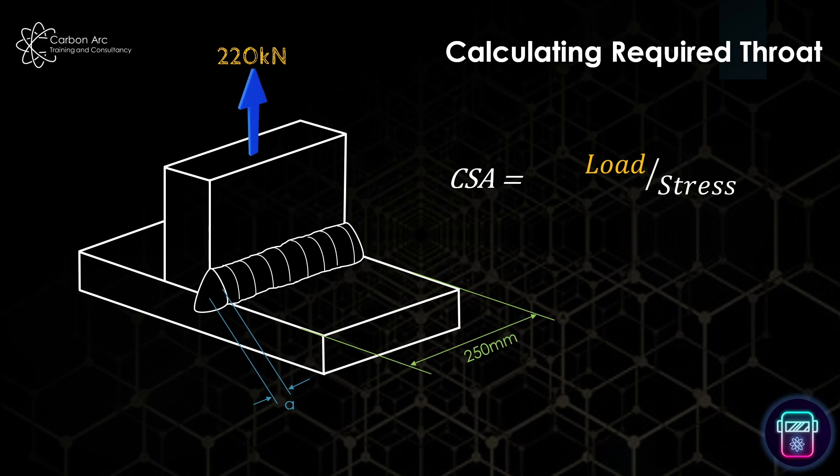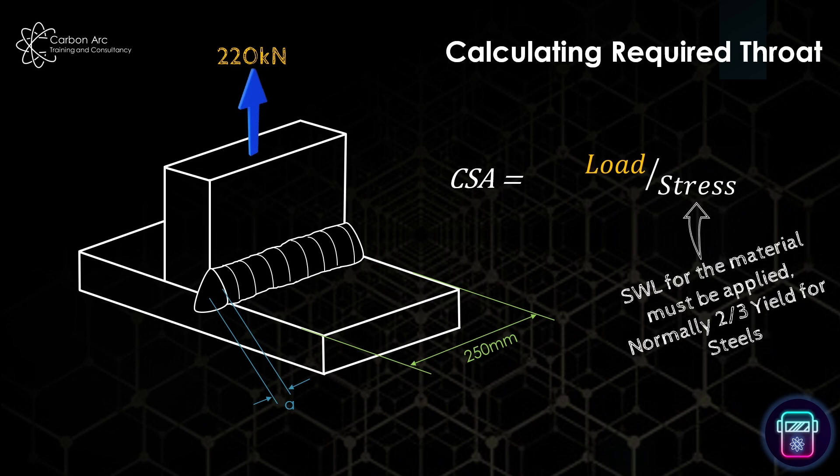But of course, we've got to work out what is my stress? What is my allowable stress to have in this component? Now, for most steels, we use a design assumption of two-thirds of the yield strength. So how do I know what two-thirds of my yield strength is? We look at our material type. Let's say this is S355 material.